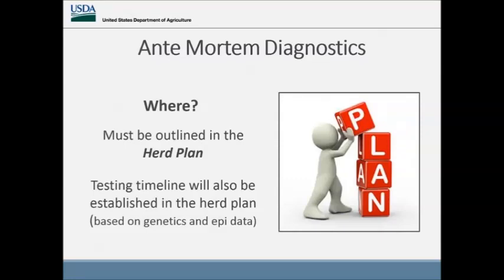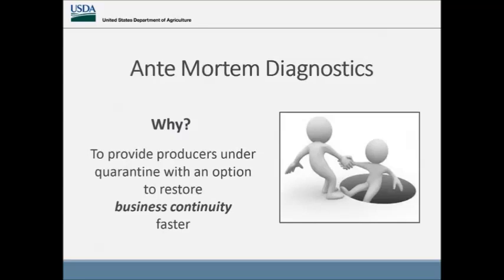If antemortem diagnostics are applicable to a herd, they must be outlined in the herd plan, which requires planning between your state representative and your APHIS representative. The testing timeline will also be established in the herd plan based on genetics and epi data. We want to provide producers under quarantine with an option to restore business continuity faster — for situations where animals were sold at the wrong time and the herd ended up under quarantine.